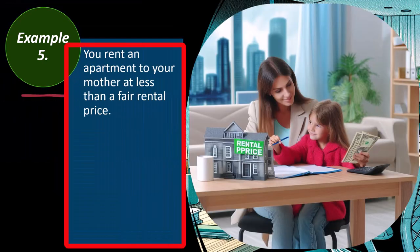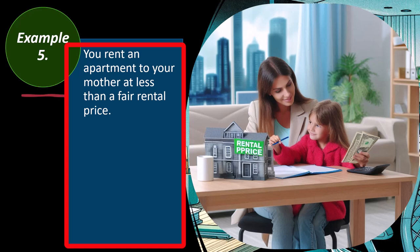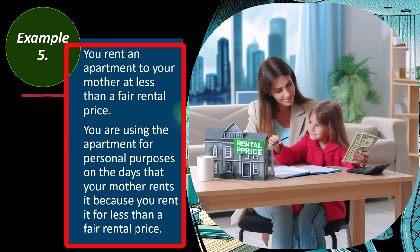Example 5: You rent your apartment to your mother at less than a fair rental price. You are using the apartment for personal purposes on the days your mother rents it, because you rent it for less than the fair rental price. Renting below market to a family member counts as personal use for you.